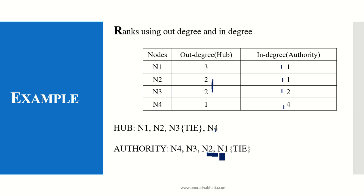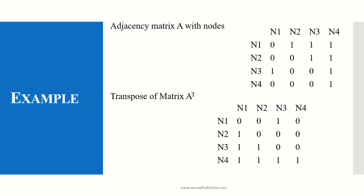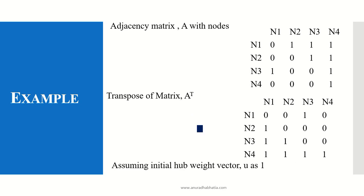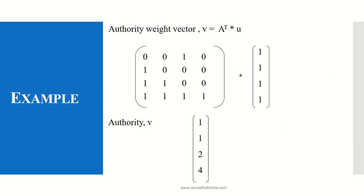Now let's see how we create it using the HITS algorithm. The adjacency matrix is given. The first step is to create a transpose of it — converting rows to columns and columns to rows — and it is given the name A raised to the power T. As the initial hub weight vector U is not given in this problem, we take the initial hub weight vector U as equal to 1 and proceed. If it is given, then we use that value and continue.